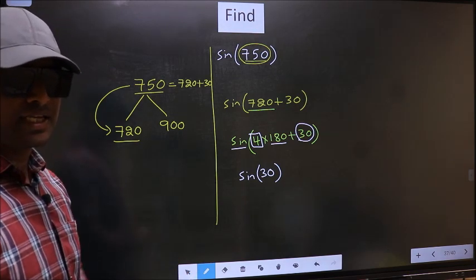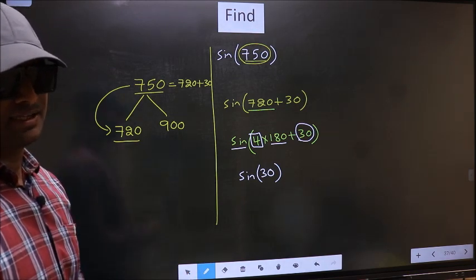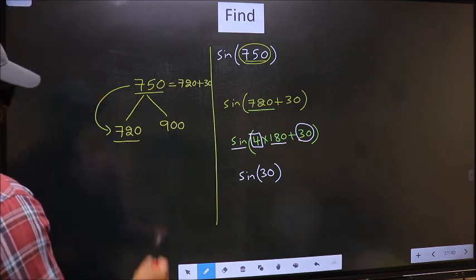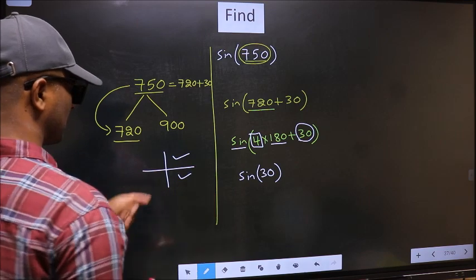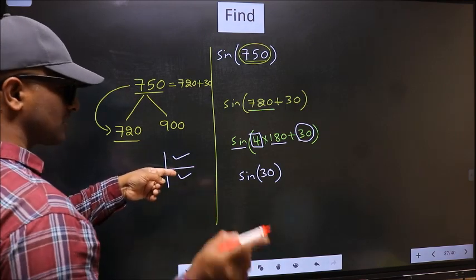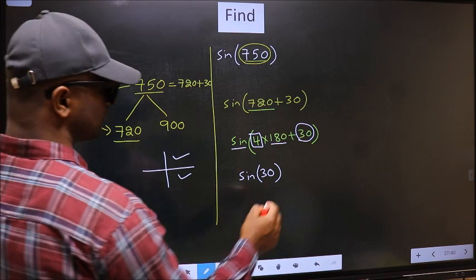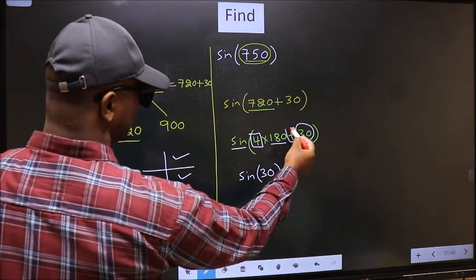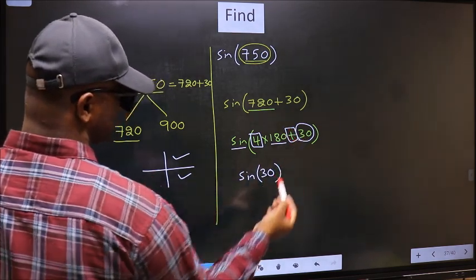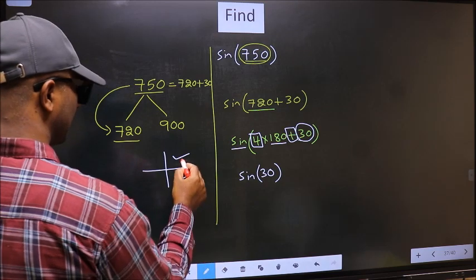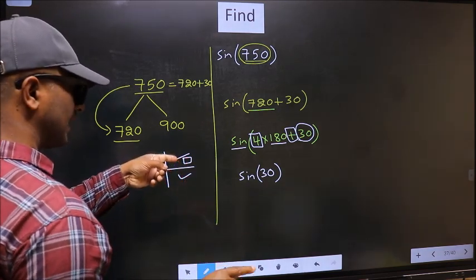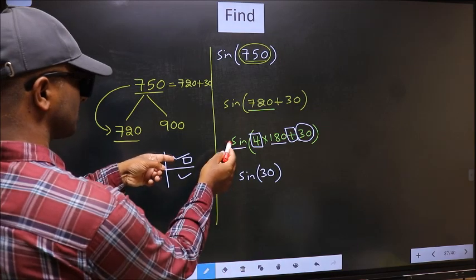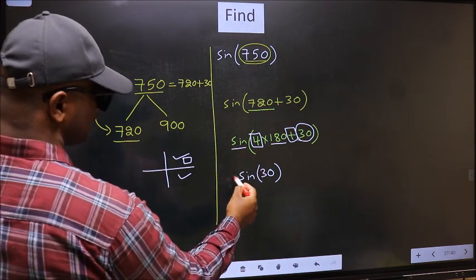And all the even multiples of 180 lie either in the first or in the fourth quadrant. So now to select the quadrant, we should look at this symbol. Here we have plus. That means the angle lies in the first quadrant. And in the first quadrant, sign is positive. So we should put plus.